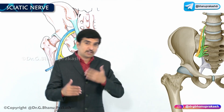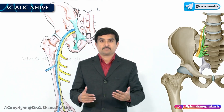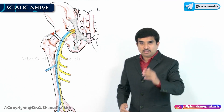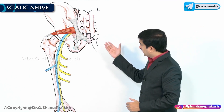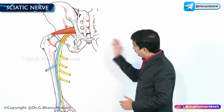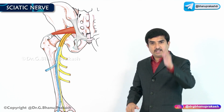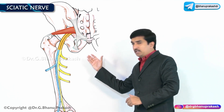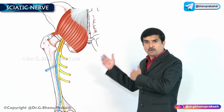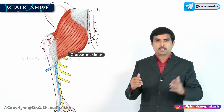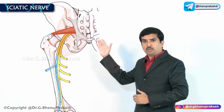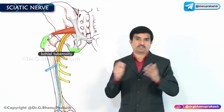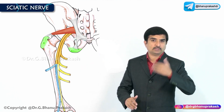After formation, the sciatic nerve passes through the greater sciatic foramen below the piriformis to enter into the gluteal region. It descends down and slightly laterally under the cover of the gluteus maximus, midway between the greater trochanter and the ischial tuberosity, along the back of the thigh.